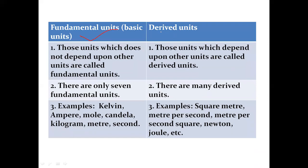Now let's talk about fundamental units and derived units. Fundamental units, also known as basic units, are those units which do not depend upon other units, whereas those units which depend upon other units are called derived units. Since there are only seven fundamental quantities, there are only seven fundamental units, and there are many derived units.